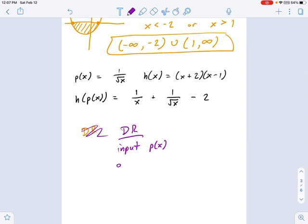And you have your output, which is h of p of x. And I've written them up here for your convenience. So, take a look at p of x. That's this guy. What are the domain restrictions? Well, we've talked about this one already. x can't be zero and x can't be negative. So, two domain restrictions there.